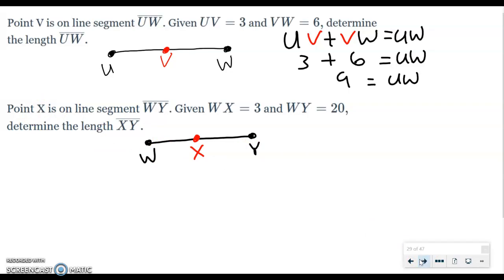Alright, next thing we're going to do is say what equals what. So we know W to X plus X to Y is going to equal W to Y. Alright, now the next thing we're going to do is plug in each one of these values. We've got WX, which is 3, and WY, which is 20. So you make sure you put it on the right thing. WX is 3 and WY is 20.